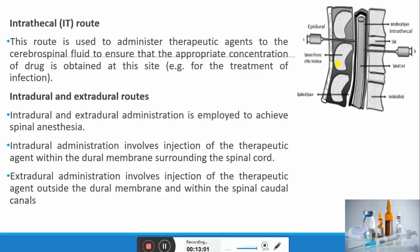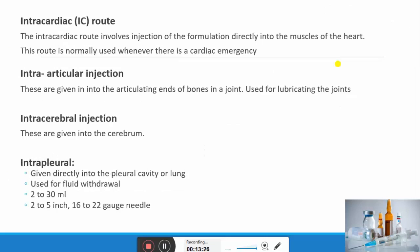Intrathecal administration involves injection of a therapeutic agent within the dural membrane surrounding the spinal cord, while epidural administration involves injection outside the dural membrane within the spinal epidural space. These routes are generally used for administration of anesthesia. Intracardiac injection involves injecting the formulation directly into the muscles of the heart and is normally used in cardiac emergencies such as cardiac arrest. Intra-articular injections are given into the synovial sac of a bone joint and are generally used for lubrication of the joint.